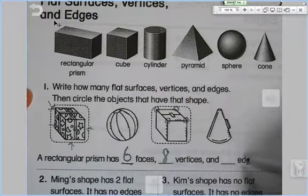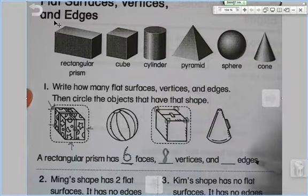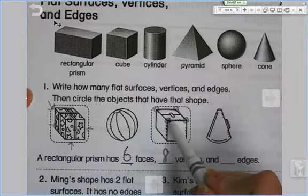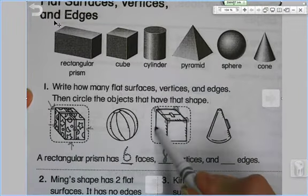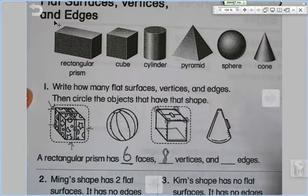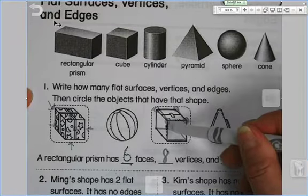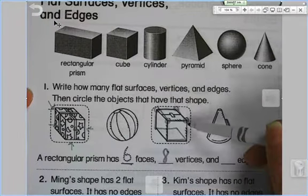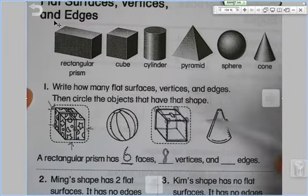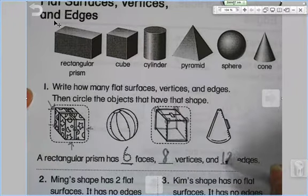And edges. Edges is the tricky because we have to make sure that we count them all. So we have one, two, three, four on top, which means we have four on bottom. Even though we can't see them all, they are there. Four plus four is eight. Are we done? No. So nine, ten, eleven, and then there's one back here hiding, which makes twelve. Twelve edges.